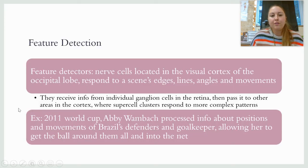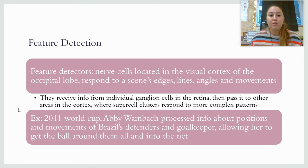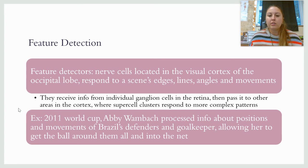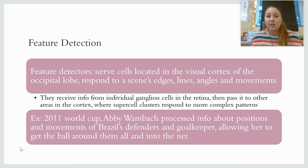Feature detectors are nerve cells located in the visual cortex of the occipital lobe, and they respond to specific features like edges, lines, certain angles, and movements. Feature detectors receive information from individual ganglion cells in the retina, then pass it to other areas in the cortex where supercell clusters respond to more complex patterns. For example, a soccer player has to use her feature detectors to see movements, angles, and lines in order to score a goal.